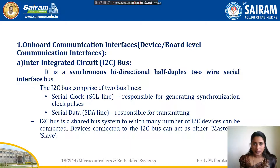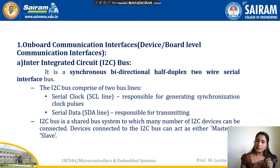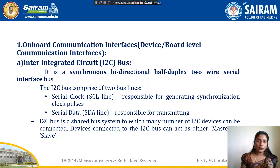The first onboard communication interface we are going to see is the I2C bus — Inter-Integrated Circuit bus. It is a synchronous, bi-directional, half-duplex, two-wire serial interface bus. The term synchronous means the transmitter and receiver are synchronized by the clock. Bi-directional means data can be transmitted in both directions — from transmitter to receiver and vice versa. Half-duplex means transmission can occur in only one direction at a time, either transmit or receive.